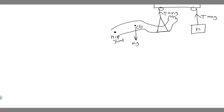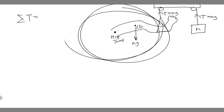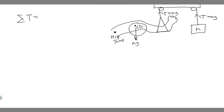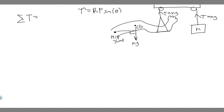Since the system is not moving, the torque on one side has to equal the torque on the other side, or else it would rotate. We take the sum of the torques. Torque is equal to r times F times sine of theta — radius times force times the sine of theta. In this case, sine of theta isn't necessary because each angle is 90 degrees. Sine of 90 is just 1, so we just need radius multiplied by force, and they have to be equal on both sides.